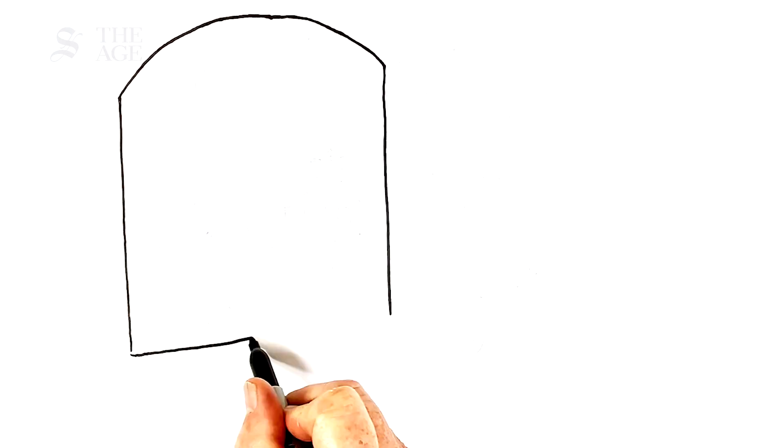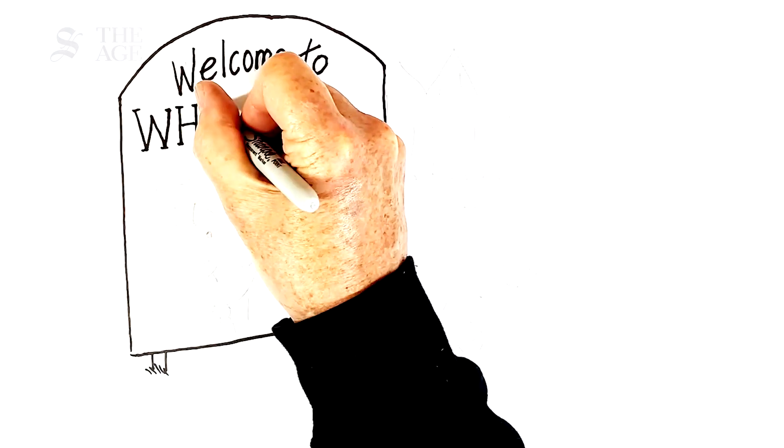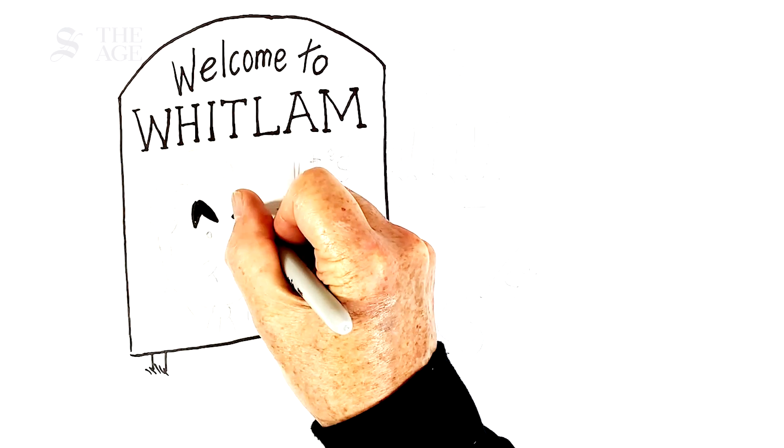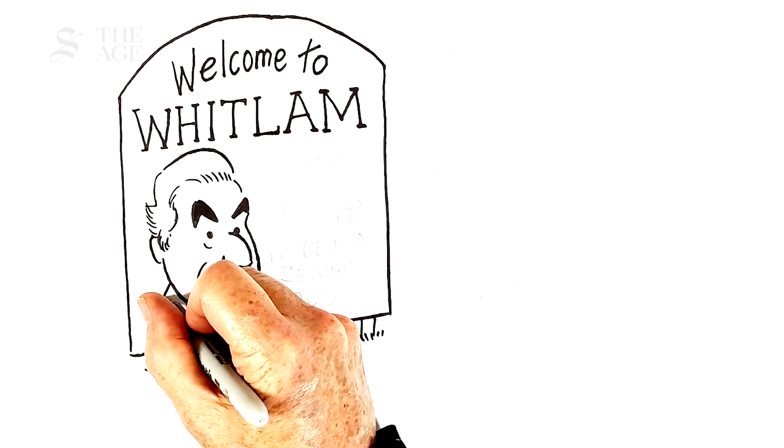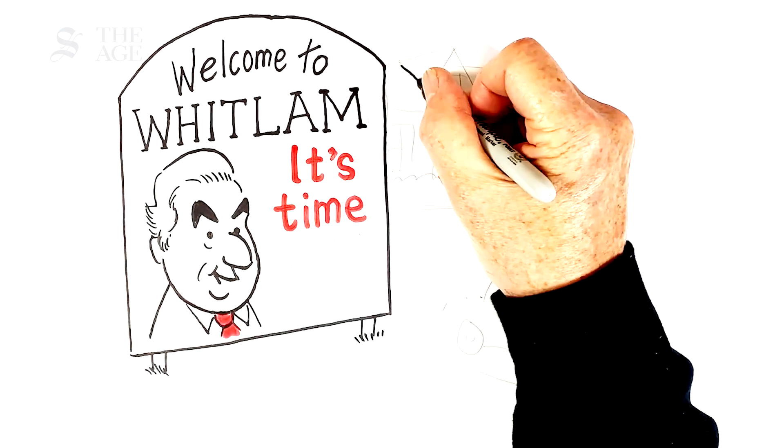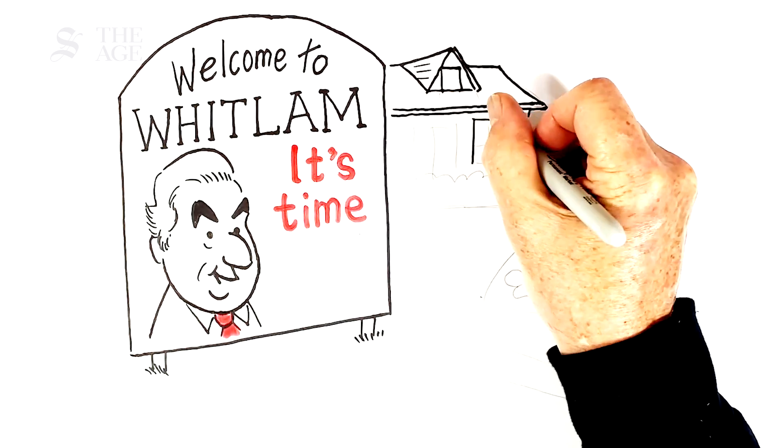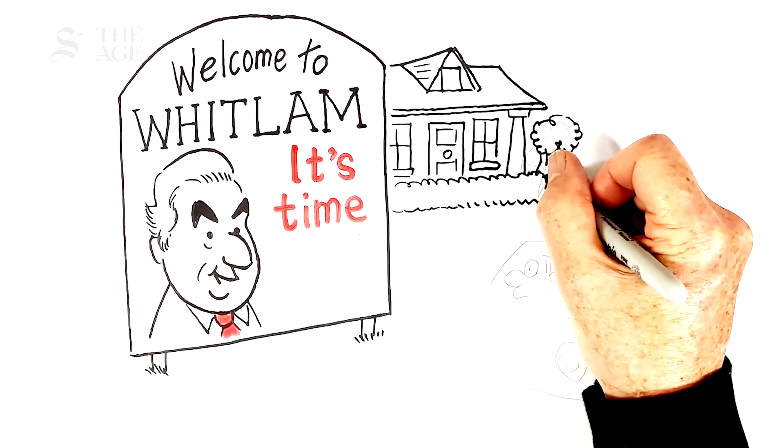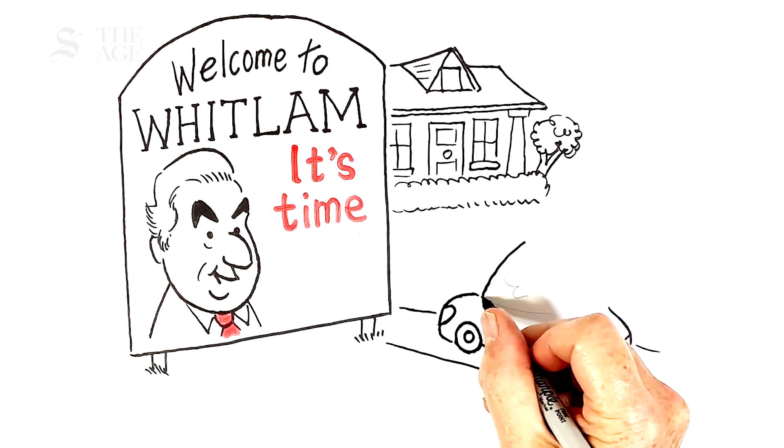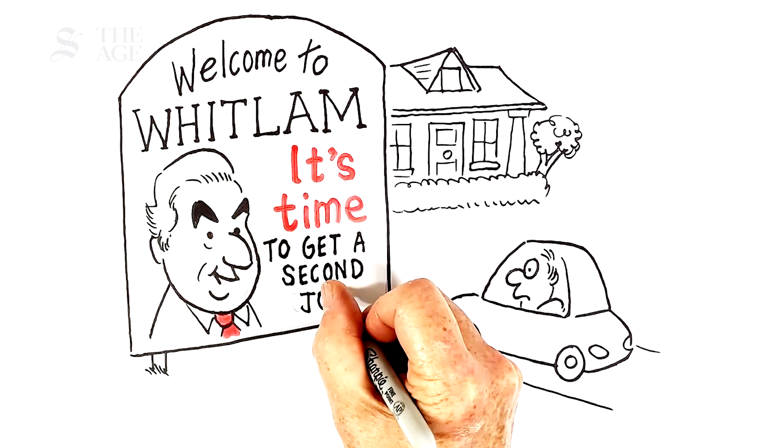15 minutes from the federal parliament, the new suburb of Whitlam is being built. When Gough Whitlam was thrown from office in 1975, the median house price in Canberra was $33,500. In that new suburb of Whitlam, the median price is $1.2 million, an increase of 3,500%.